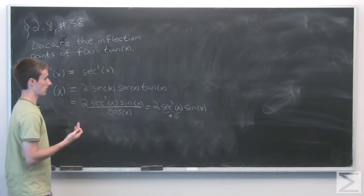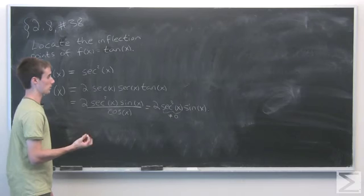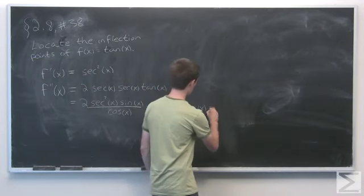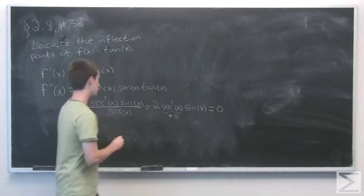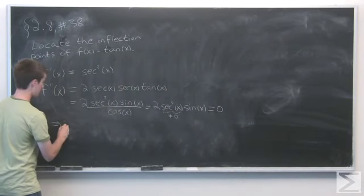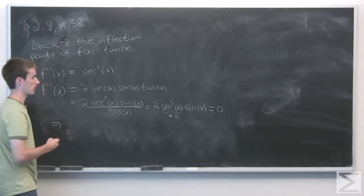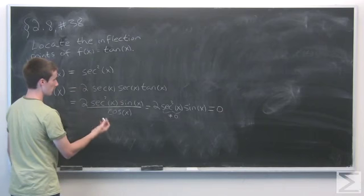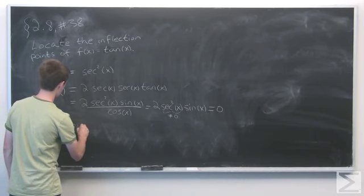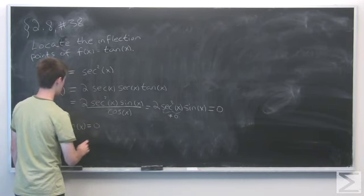So we need to look at the points where this is equal to 0. Well, that means that since secant cubed of x is never equal to 0, it must mean that sin of x is equal to 0.